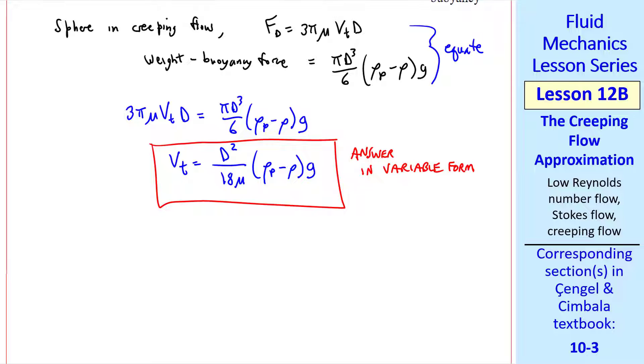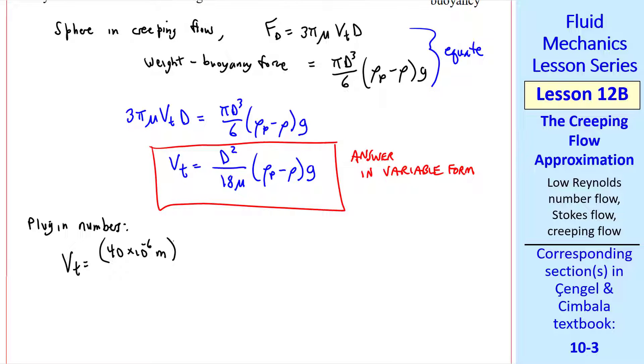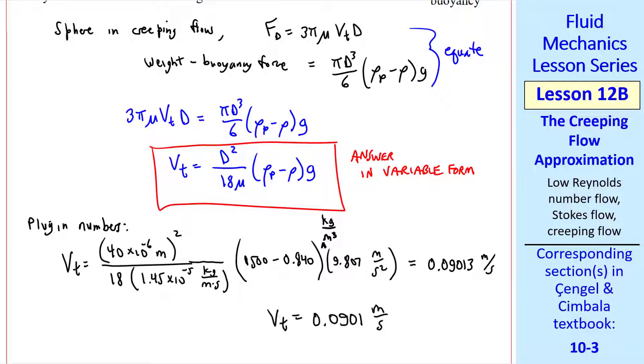Now we plug in the numbers. D is 40 times 10 to the minus 6 meters, and that's squared, over 18 mu, times the difference in density, times G, and we get .09013 meters per second. So to three significant digits, VT is 0.0901 meters per second.